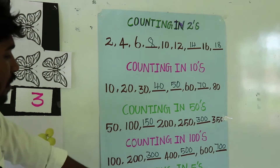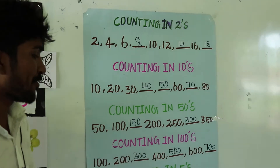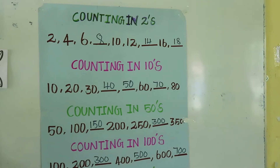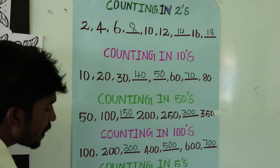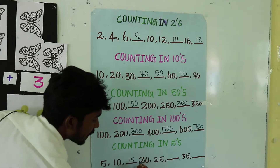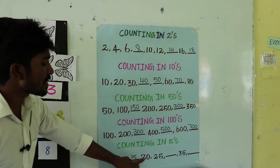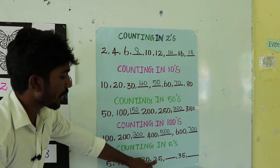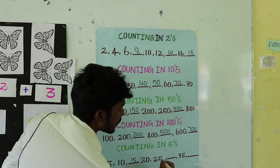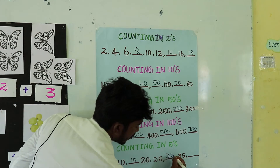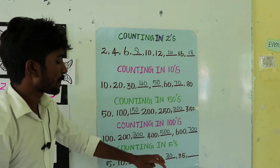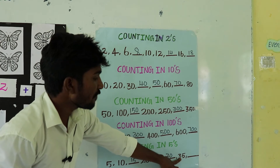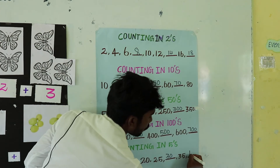Then last one, counting in 5s. So 5 plus 5 is equal to 10, 10 plus 5 is equal to 15, 15 plus 5 is equal to 20, 20 plus 5 is equal to 25, 25 plus 5 is equal to 30, 30 plus 5 is equal to 35, 35 plus 5 is equal to 40.